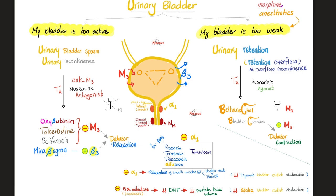The external sphincter is voluntary — under your voluntary control. The internal sphincter is involuntary and autonomic. Alpha-1 stimulation, part of the sympathetic nervous system, closes the sphincter and prevents urine outflow. But in benign prostatic hyperplasia, the outflow is already struggling, so we give alpha-1 blockers. These include prazosin, terazosin, doxazosin, alfuzosin, and tamsulosin.